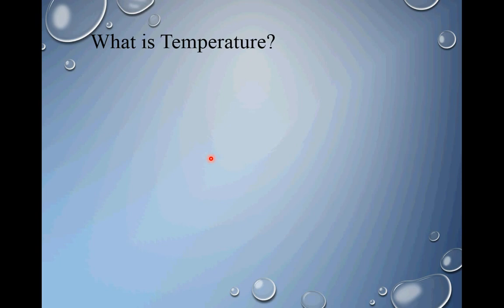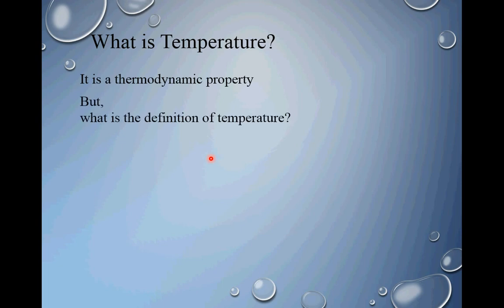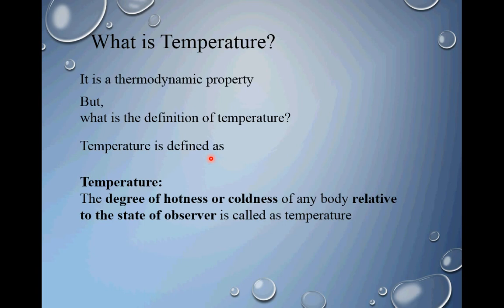What is temperature? We all know and are familiar with this word temperature. We can judge the temperature of a given body whether it is having a higher value or lower value as compared to the surroundings. But the question is, what is the definition of temperature? Temperature is defined as: the degree of hotness or coldness of any body relative to the state of the observer is called as temperature.